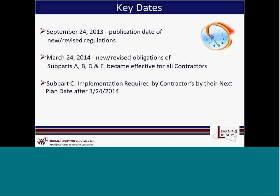Let's look at a few key dates with regard to the regulations. The new and revised regulations were published initially on September 24, 2013. Subparts A, B, D, and E became effective for all contractors on March 24, 2014. However, Subpart C of the regulations, which addresses all of the affirmative action program requirements, had a phased approach, meaning contractors and subcontractors had to implement the requirements under this Subpart by their next plan date after the March 24, 2014 date.